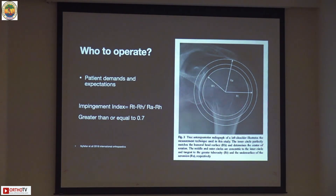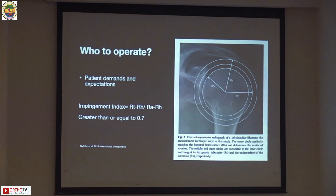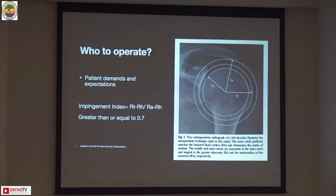We always remember the five to seven millimeter distance between the humeral head and the GT — they are using that same concept. If the impingement index is greater than or equal to 0.7, the patient will benefit from surgery. It is a lot of information, but it is something to go home and think about — a tool to understand which patient will do better with or without surgery.